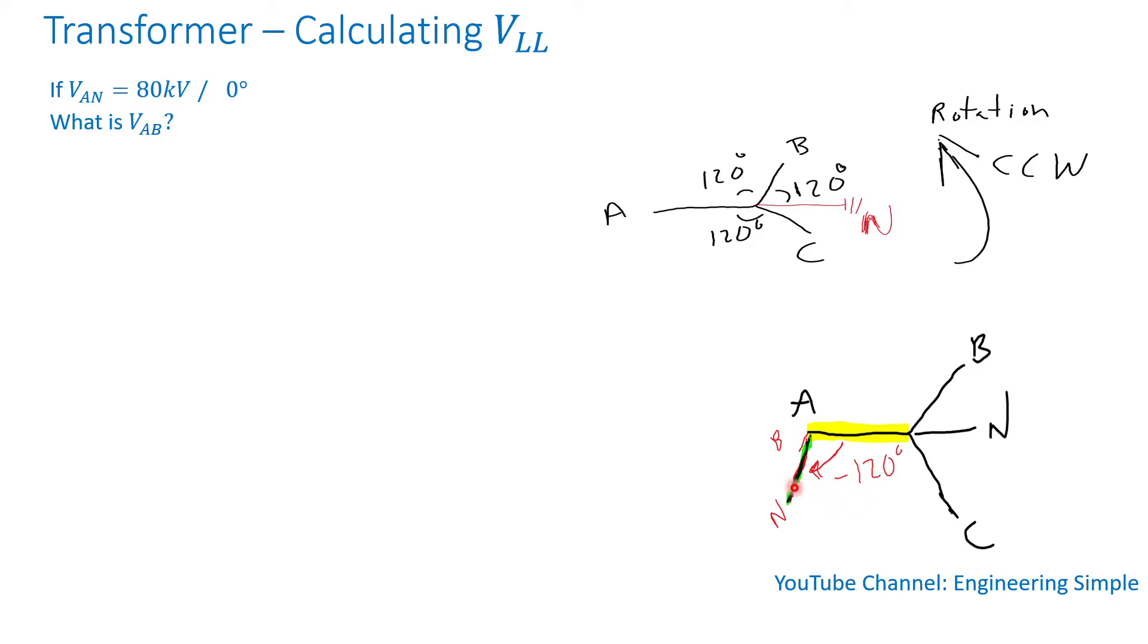If I slide it to the left such that B overlaps A without changing anything, staying parallel, I will get VBN lagging VAN by 120 degrees, and this is something I'm going to use later.